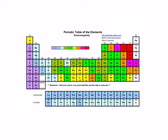For example, carbon is in group 4A and has four valence electrons. Nitrogen is in column 5 and has 5 valence electrons. Oxygen is in column 6 and has 6 valence electrons, etc.